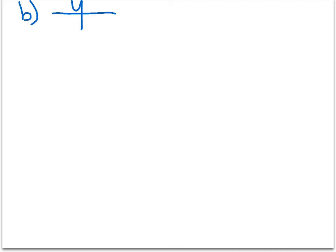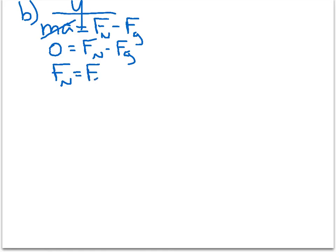So we're going to say ma, which is always our net force, equals Fn minus Fg. That's assuming that up is positive and down is negative, because it doesn't really matter since there is no acceleration. So since there is no acceleration, all of this becomes 0. So 0 equals Fn minus Fg, which means Fn equals Fg. That's great, but we do need to know what Fn is.